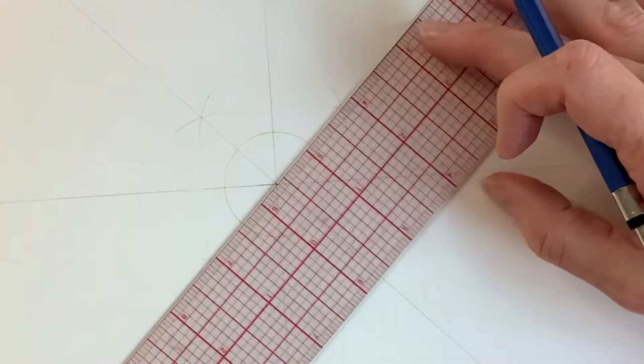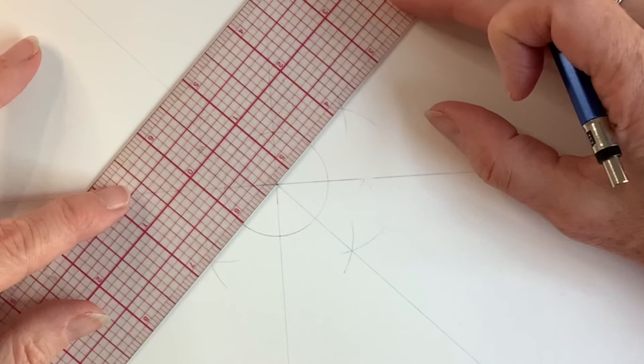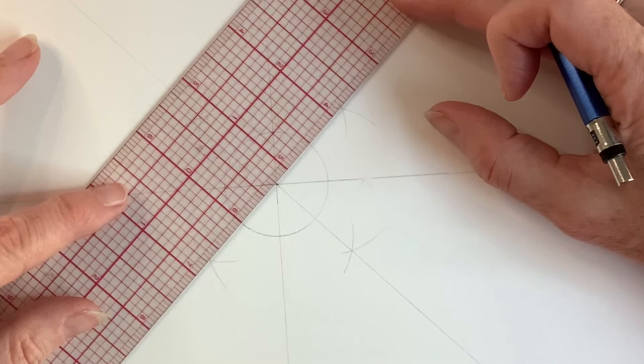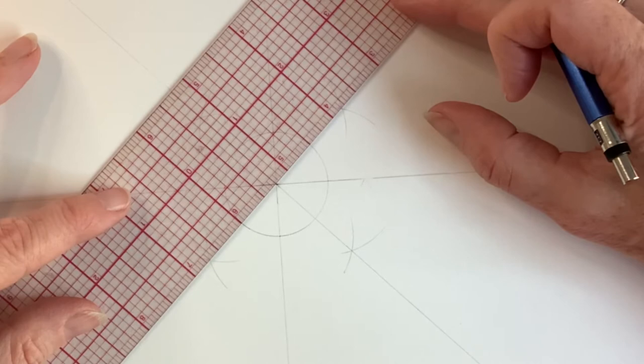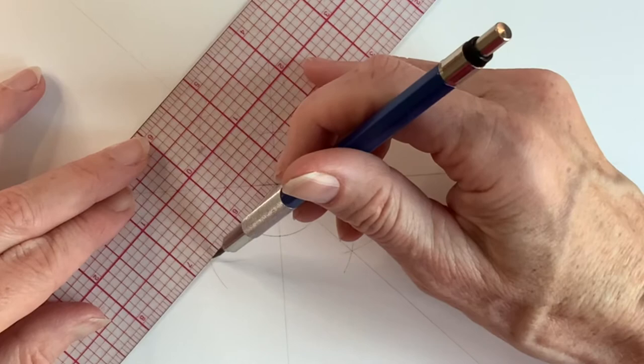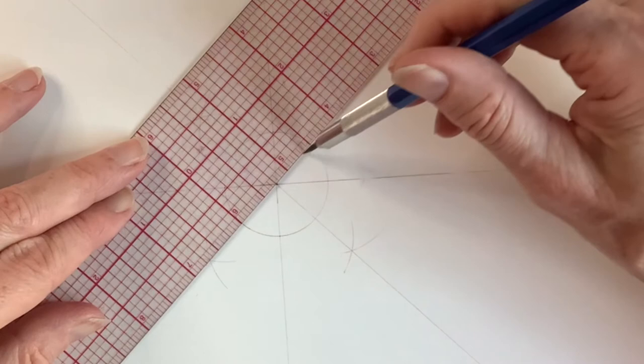Take the metal point and open up the compass so the lead sits on the horizontal where the horizontal line touches the circle. Then you make a mark on either side. Then you go to the next intersection on the circle. We're going to have four sets of these. Take your ruler and put your ruler through the center.